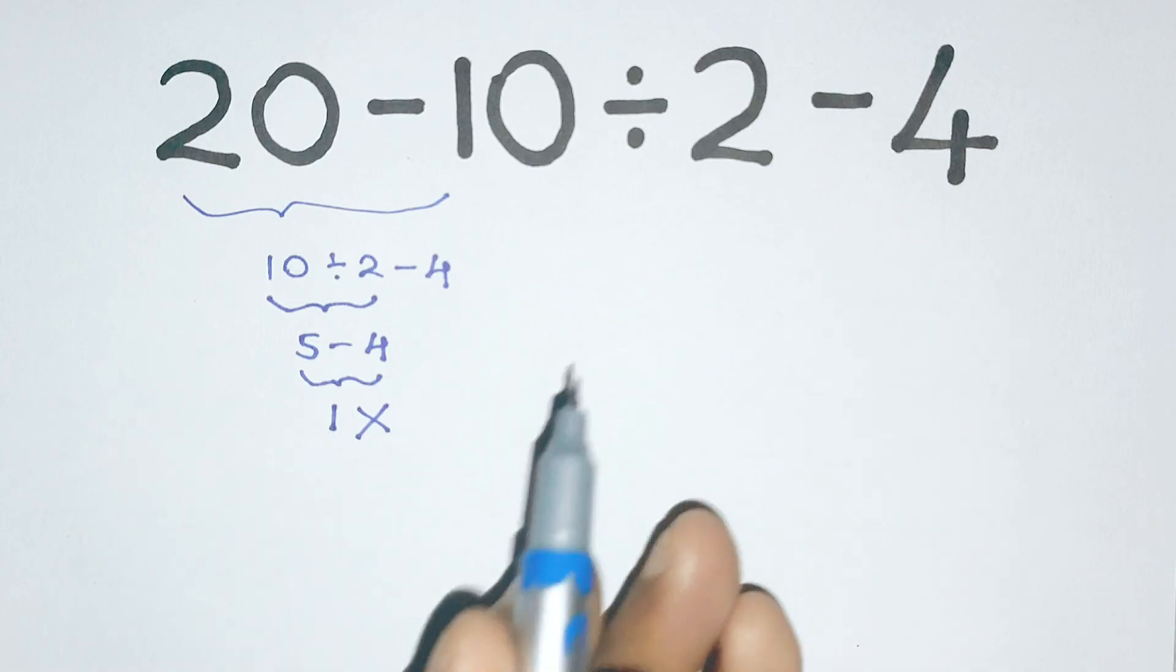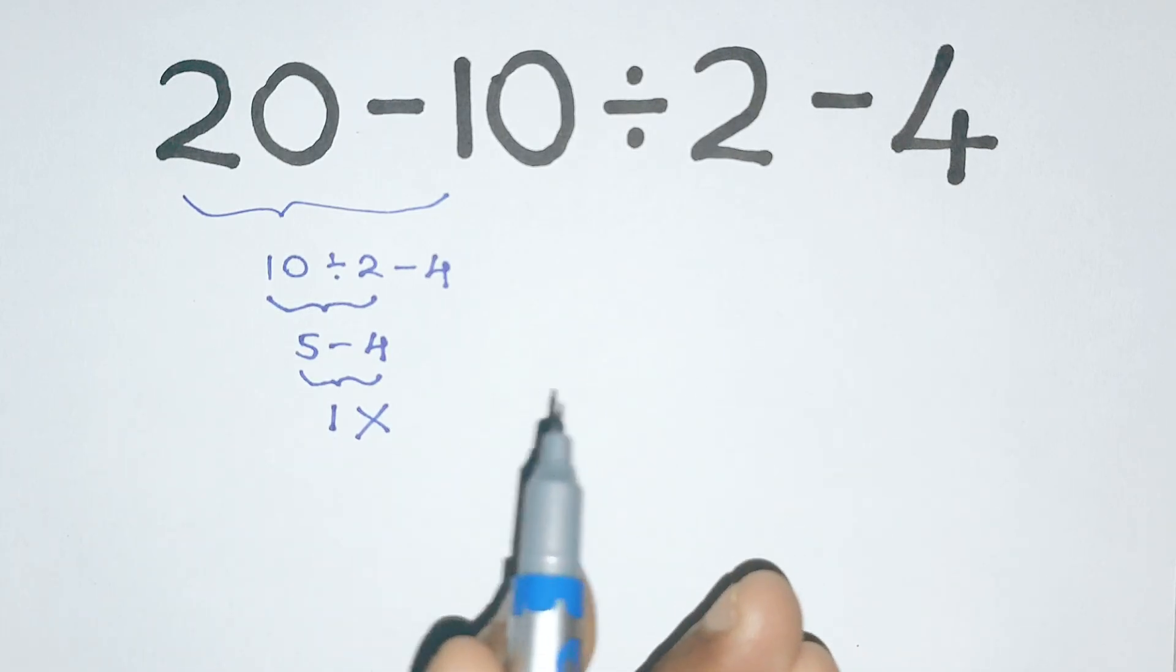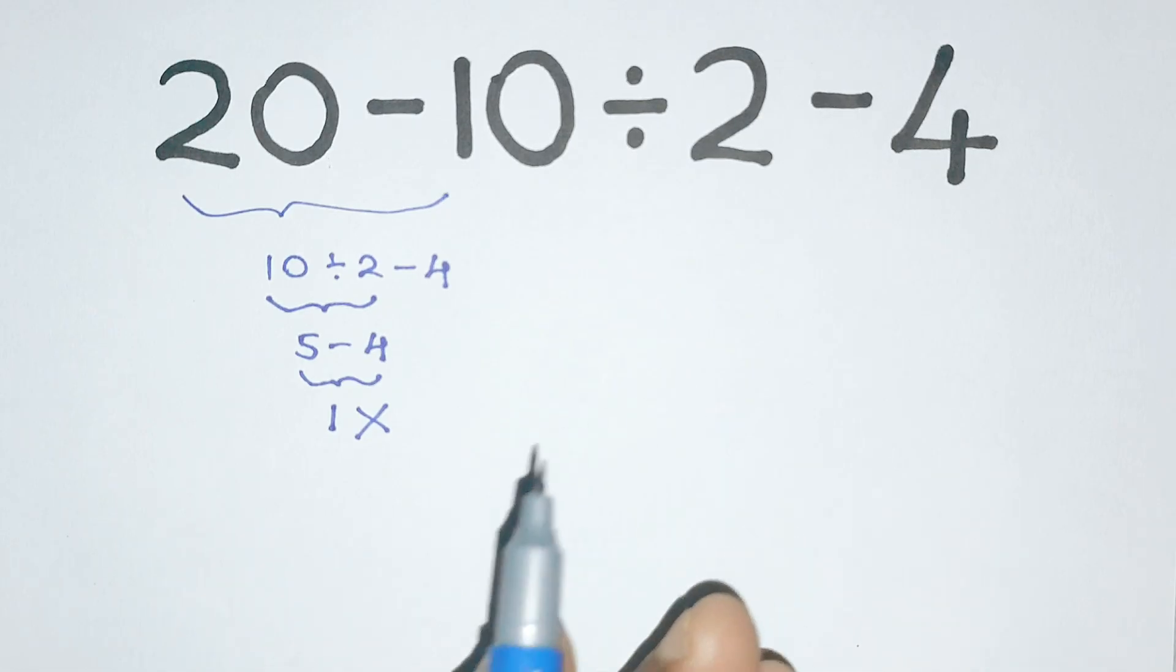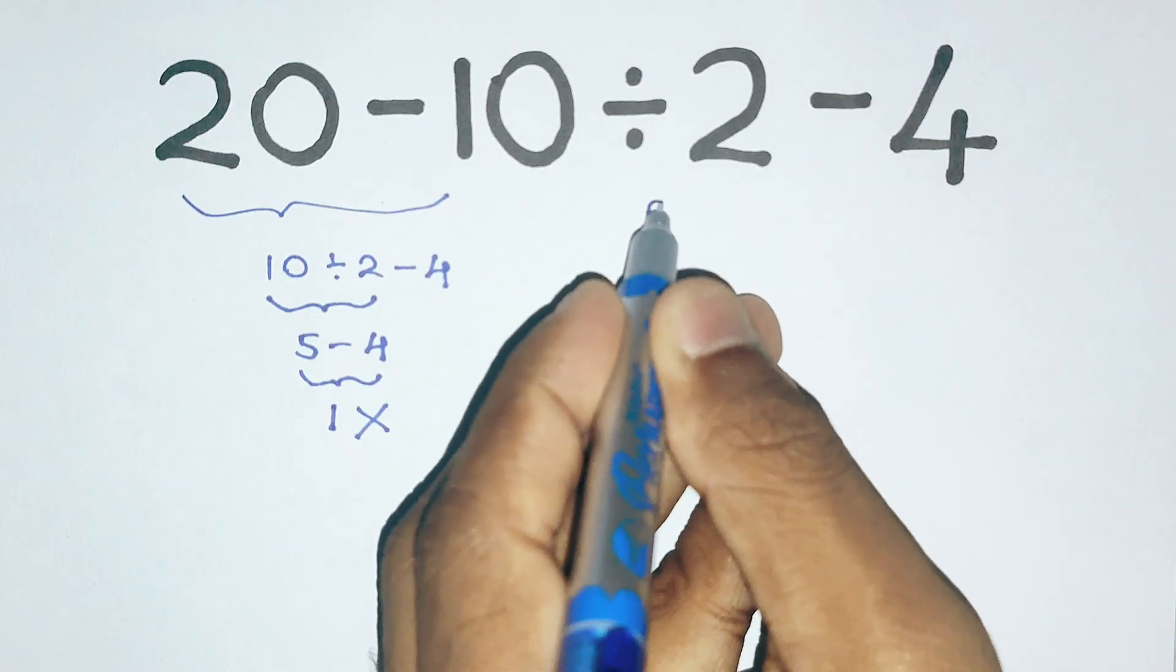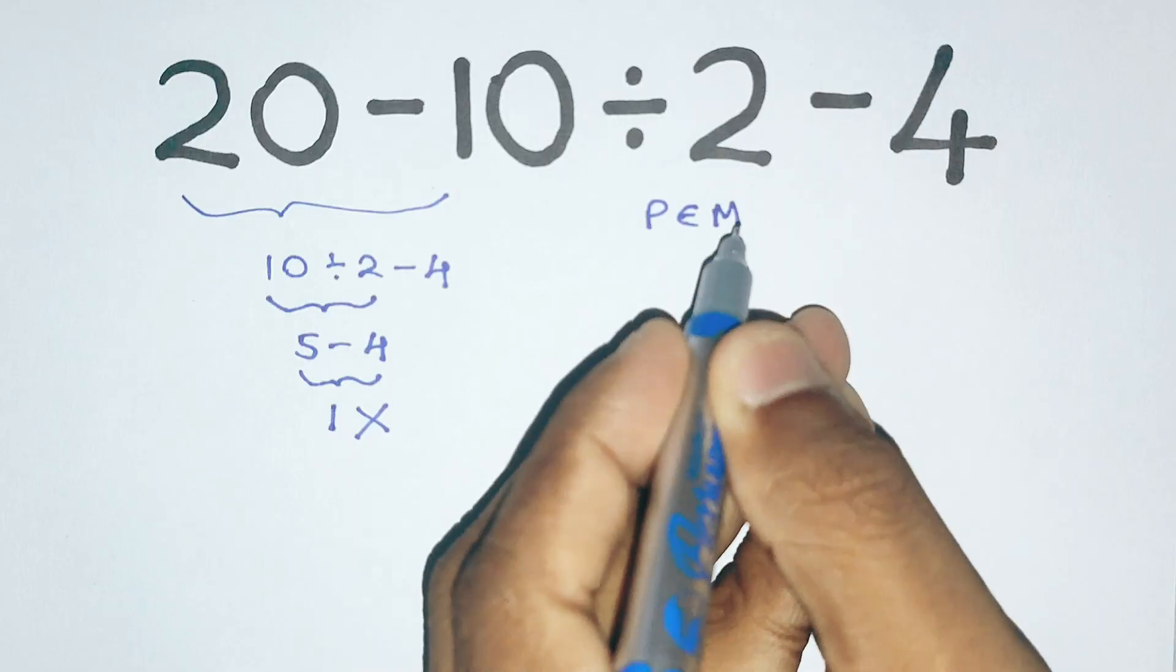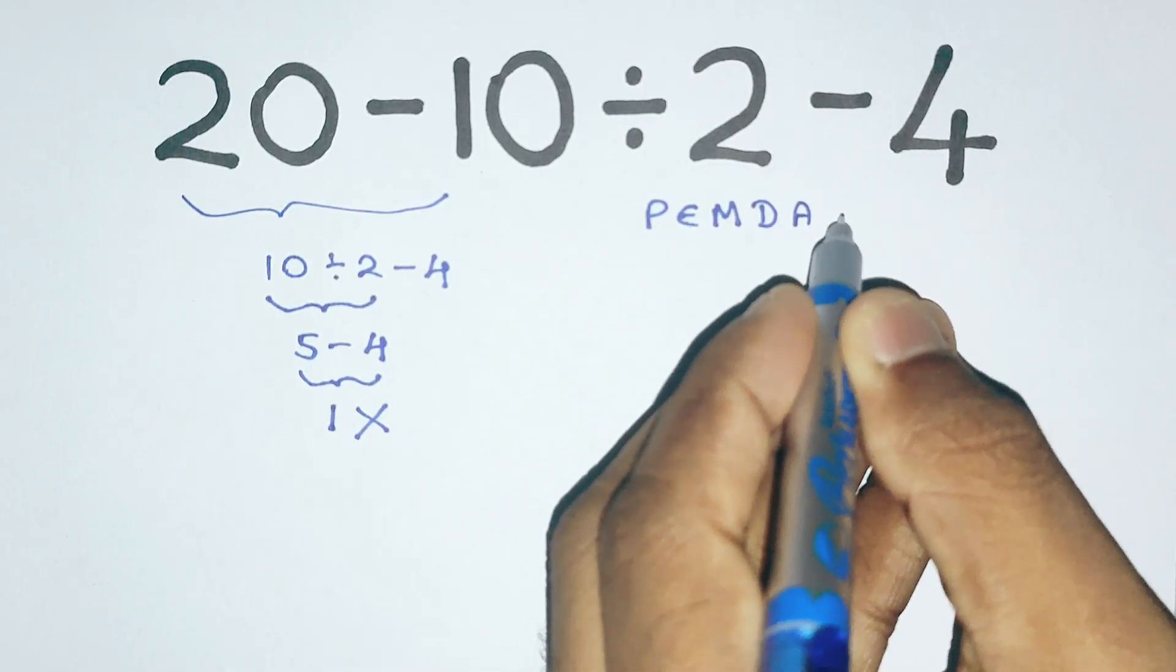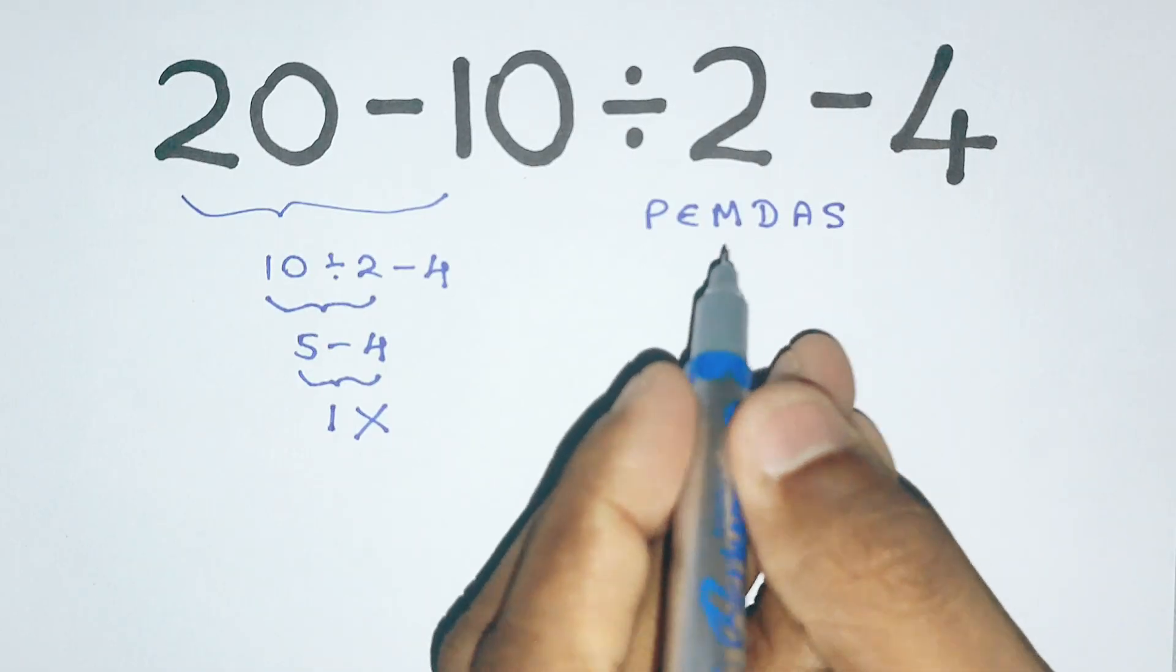The mistake happens because when solving mathematical expressions like this, we have to follow the order of operations. I am sure you have heard the rule PEMDAS or sometimes called BODMAS. In PEMDAS, P stands for parenthesis, E stands for exponents, M stands for multiplication, D stands for division, A stands for addition and S stands for subtraction.